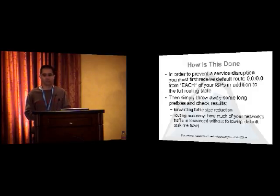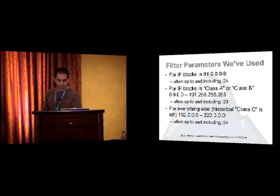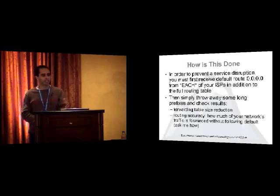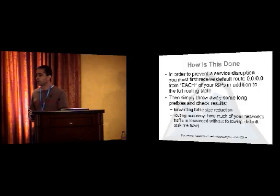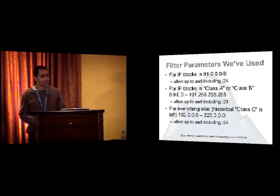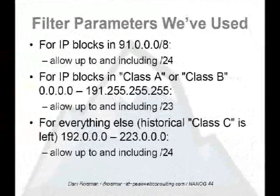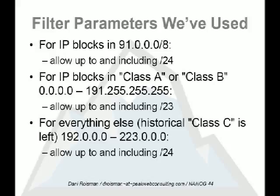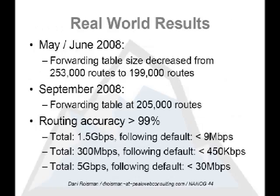How much of your traffic can follow your forwarding table without going to quad-zero? If you want ideas on how to do this, ask me how. The filter I used is pretty simple. 91/8 is a curious block allocated up to /29 according to documentation; I allowed up to /24 for that block. For the classful A and B legacy space — first octet zero through 191 — I allow up to and including /23s, throwing away some /24s there. For everything else, the historical class C swamp space, I allow up to /24.